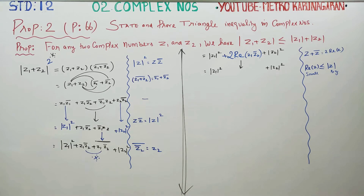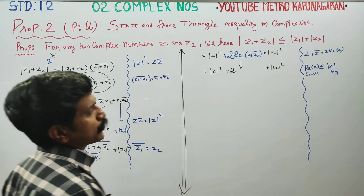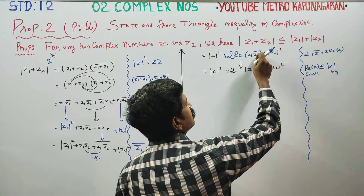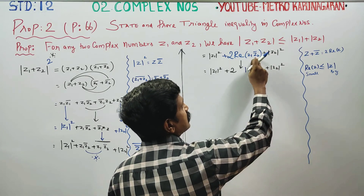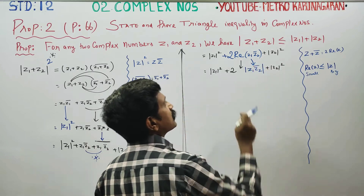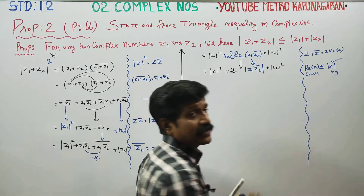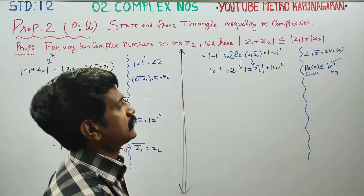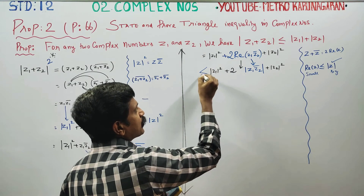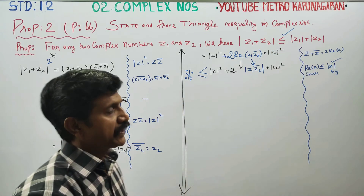I am going to replace this. Since real part of Z1 Z2 conjugate is less than or equal to modulus of Z1 Z2 conjugate, we replace 2 times real part with 2 times modulus. When a less than or equal to symbol is introduced, the overall inequality changes to less than or equal to. This is the most important step where we introduce the inequality.